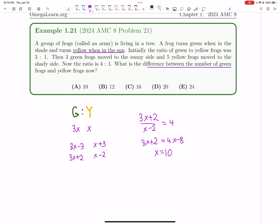So now, this is what we have now, right? 3x plus 2 and x minus 2. So the difference, we can just calculate. This is equal to 32, and this is equal to 8, so the difference is just 24, and that's our final answer.